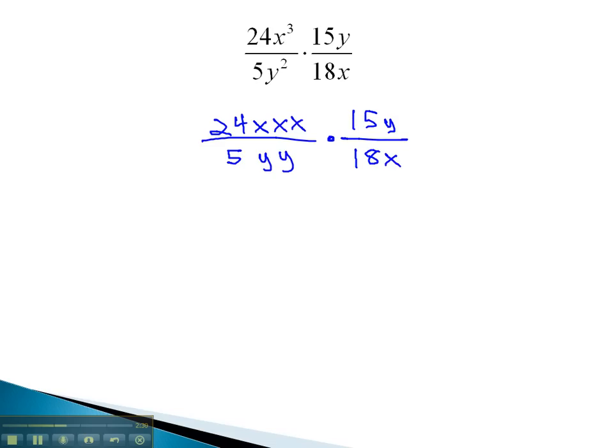Again, we'll do some reducing with the numbers first. 15 and 5, one from the numerator and denominator, are both divisible by 5. 5 divided by 5 is 1, and 15 divided by 5 is 3.